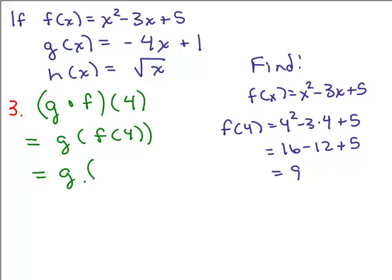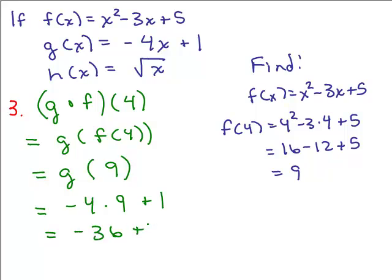We have g of 9, and now we look at the function for g. g of x is negative 4x plus 1, so we plug in 9 for x: negative 4 times 9 plus 1. That's negative 36 plus 1, which is negative 35.